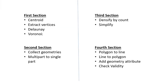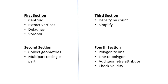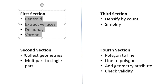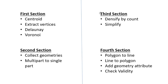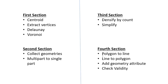The four sections are as follows: the first section contains centroid, extract vertices, Delaunay triangulation, and Voronoi tools. The second section contains collect geometry and multi-part to single part. The third section contains densify by count and simplify. The fourth section contains polygon to line, line to polygon, add geometry attributes, and check validity.